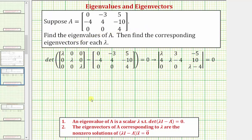To find the eigenvalues of a square matrix A, we need to find the values of lambda that satisfy the equation where the determinant of lambda I minus A equals zero. And then to find the eigenvectors of A corresponding to lambda, we need to find the nonzero solutions to that equation, solving for vector x.